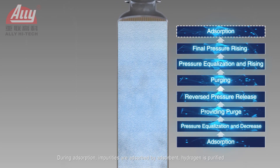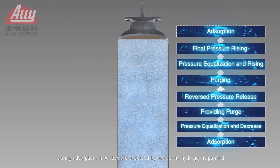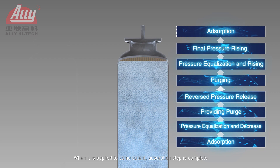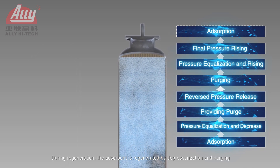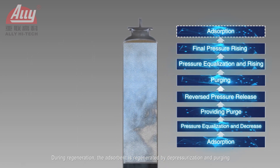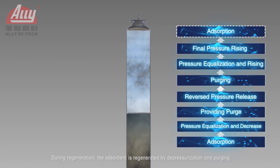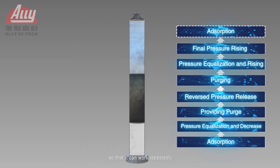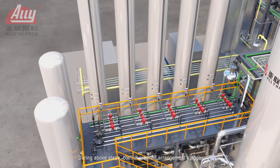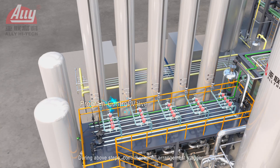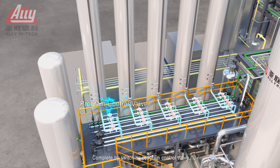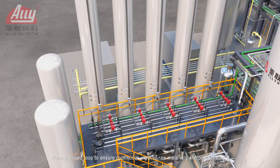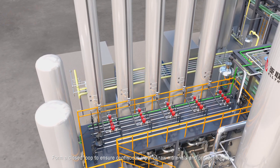When adsorption reaches a certain extent, the adsorption step is complete. During regeneration, the adsorbent is regenerated by depressurization and purging so that it can work repeatedly. The control program staggers these steps by switching program control valves to form a closed loop, ensuring continuous input of raw materials and product output.